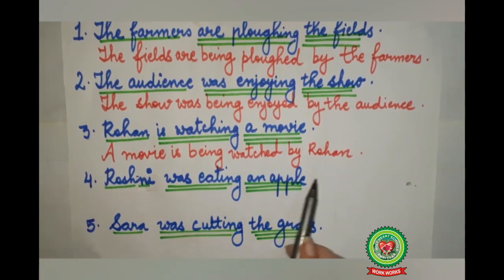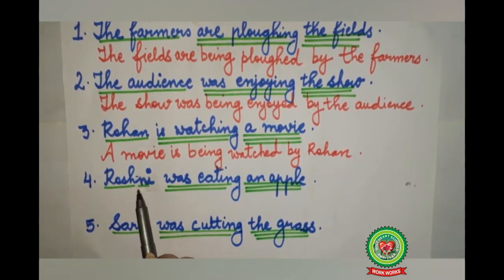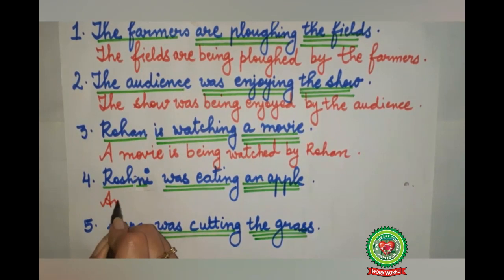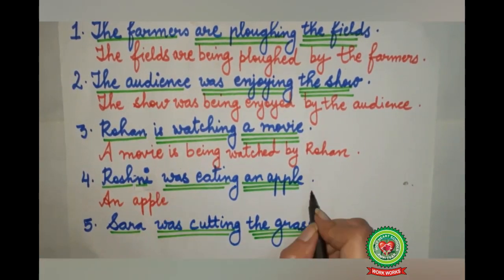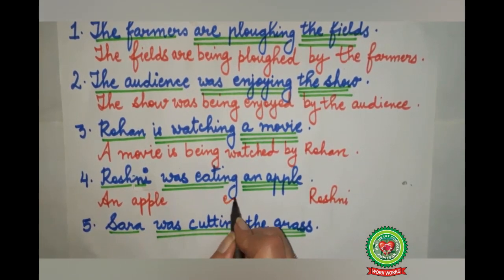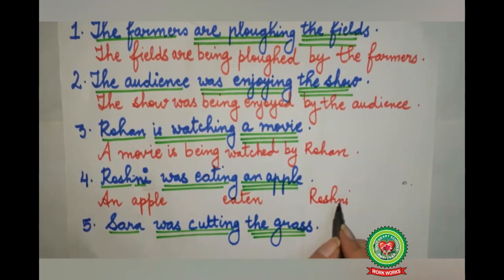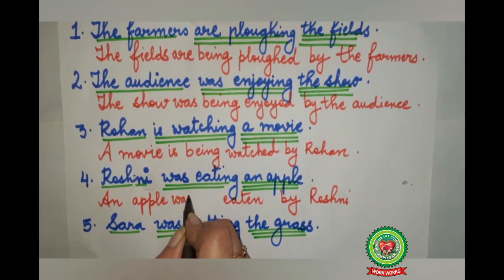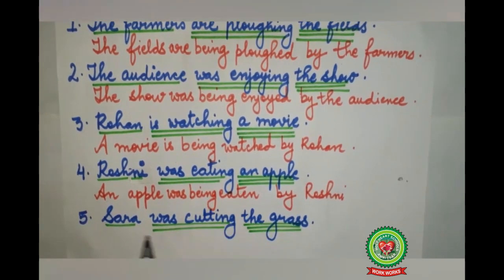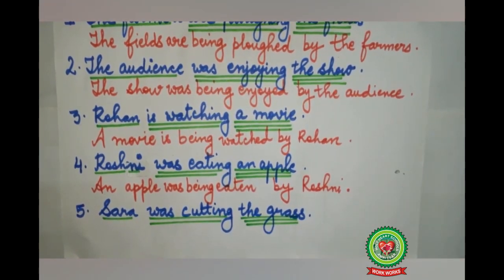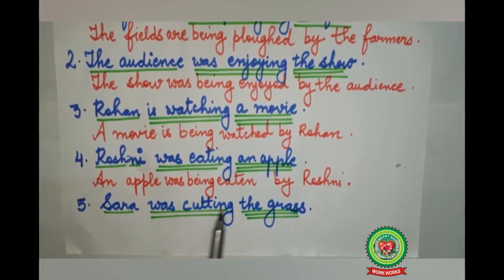The fourth sentence: 'Roshni was eating an apple.' Who? Roshni — subject, single underline. 'Was eating' — action word, double underline. What? An apple — object, triple underline. An apple comes in the beginning, Roshni goes to the last. 'Eating' changes to its V3 form 'eaten'. An apple is singular, so 'was' remains. We add the word 'being'. The answer: 'An apple was being eaten by Roshni.' Full stop.